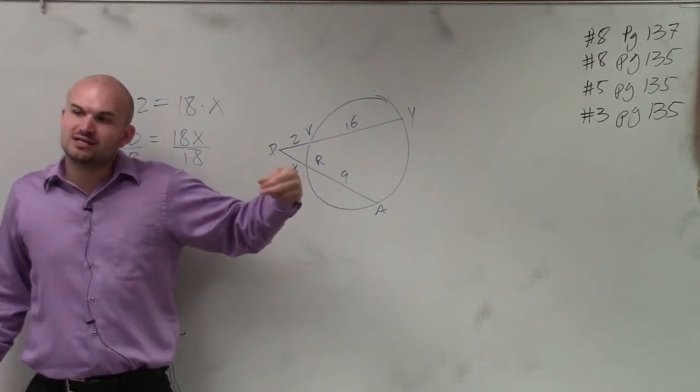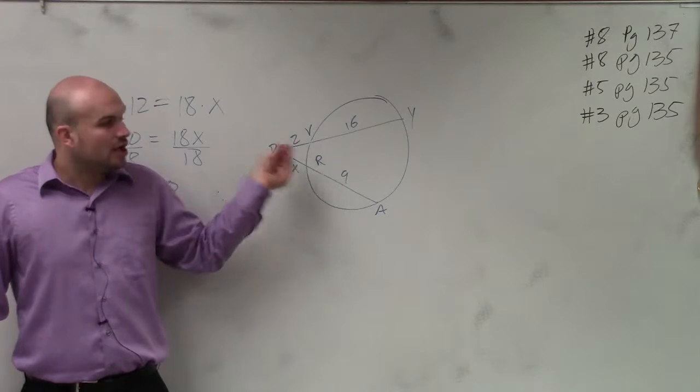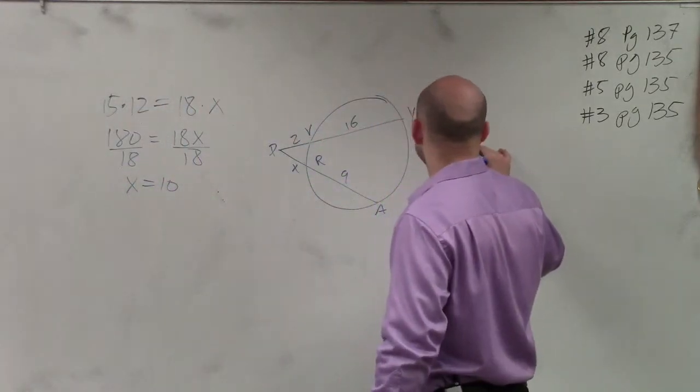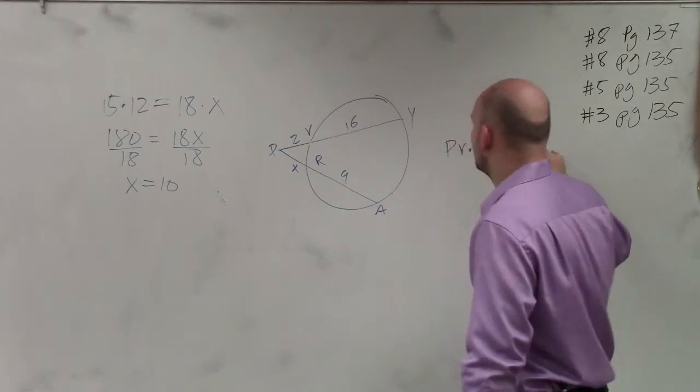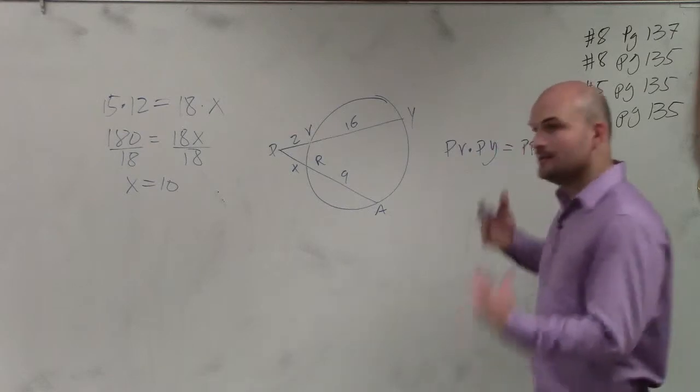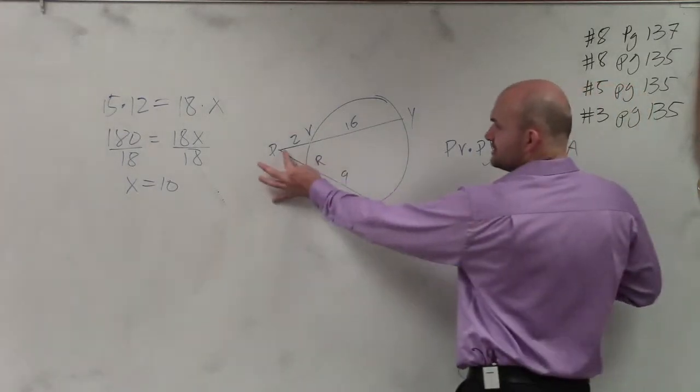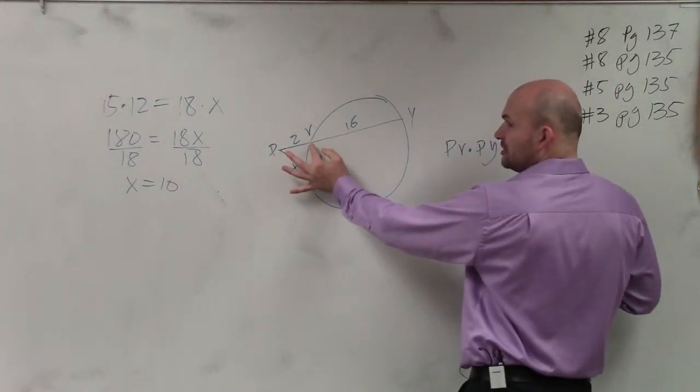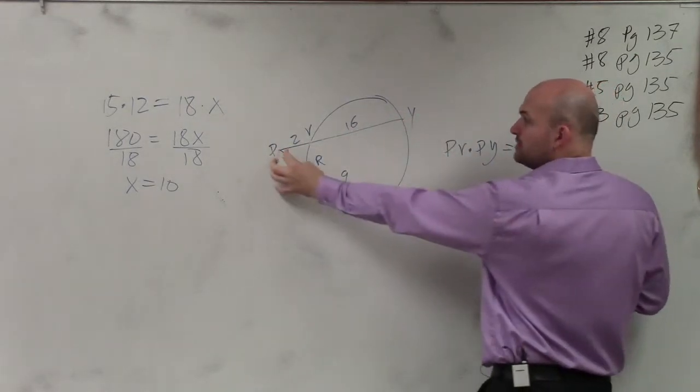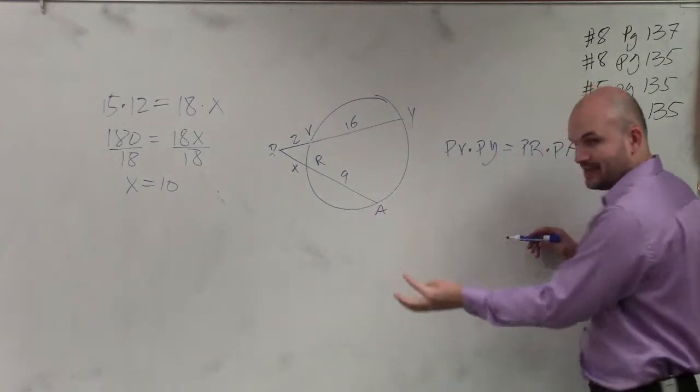So last class period, what we talked about is the relationship of their lengths is PV times PY is equal to PR times PA, meaning the distance from my point to the circle times the whole length of the secant line is equal to the other length to the circle times the whole secant line.